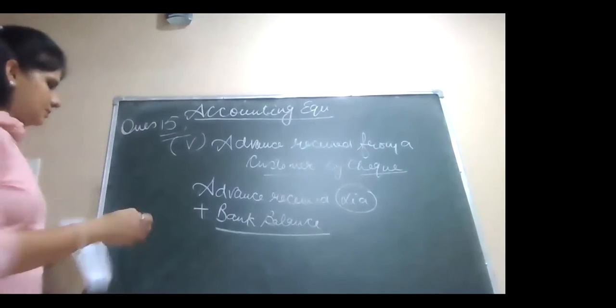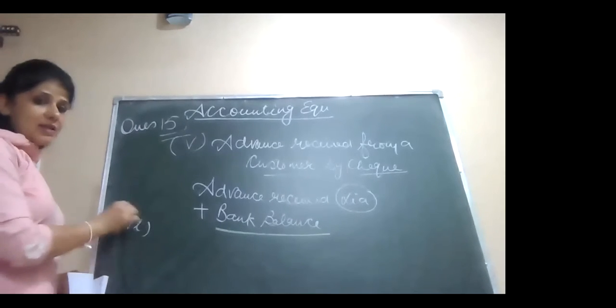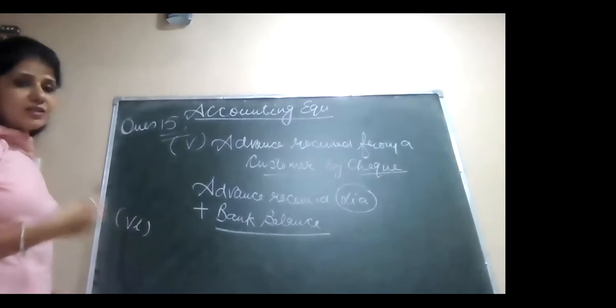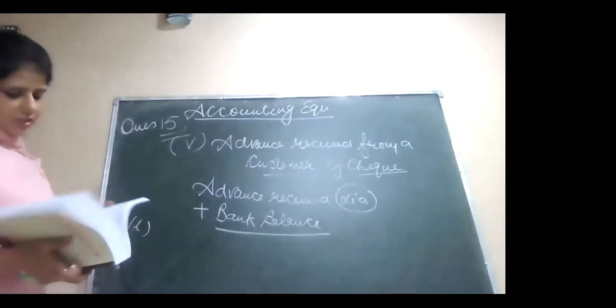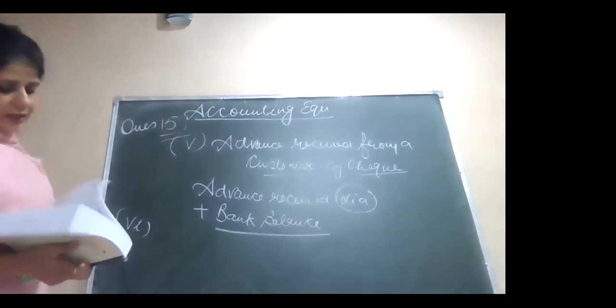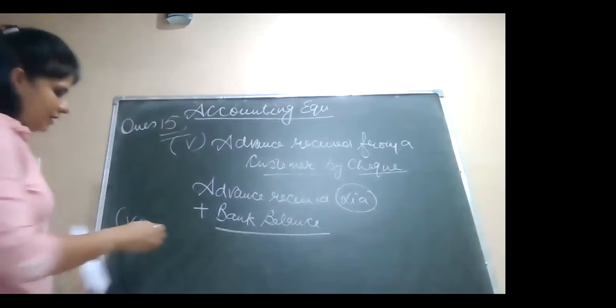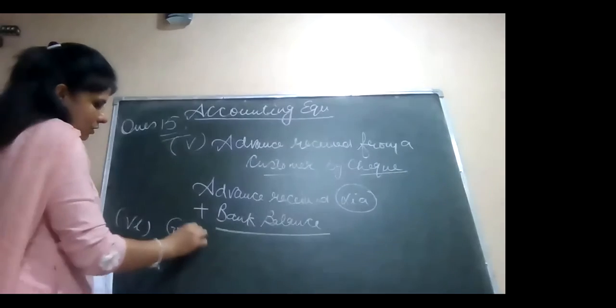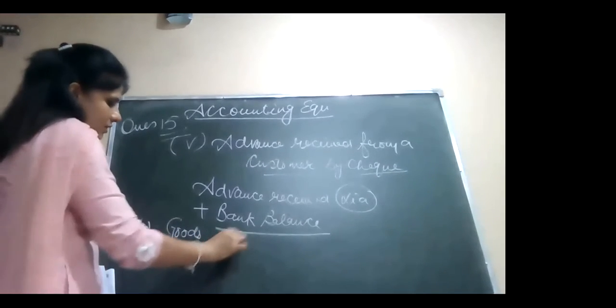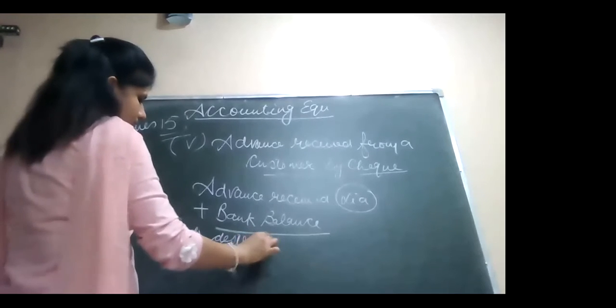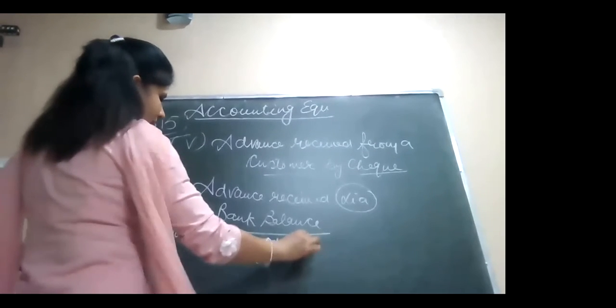Now come to the next sixth point. You will be continuing with the question. First four points yesterday we discussed, you will be creating this fifth transaction there only. Goods destroyed by fire. Let me write the statement here: goods destroyed by fire.